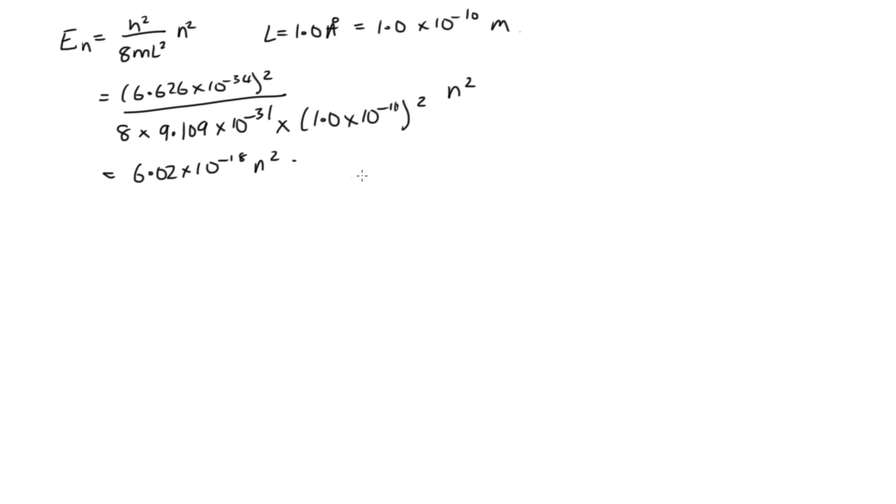But we want our answer in electron volts. So to get to electron volts, we divide by E, which is equal to 1.602 times 10 to the minus 19. So when we do that, we end up with 37.6 n squared electron volts.